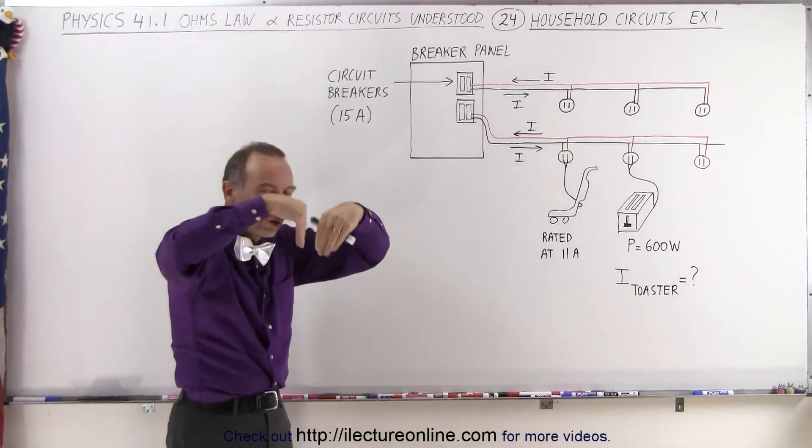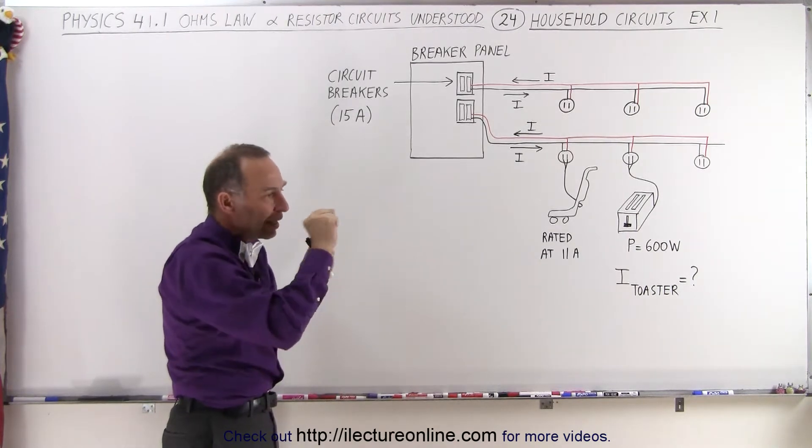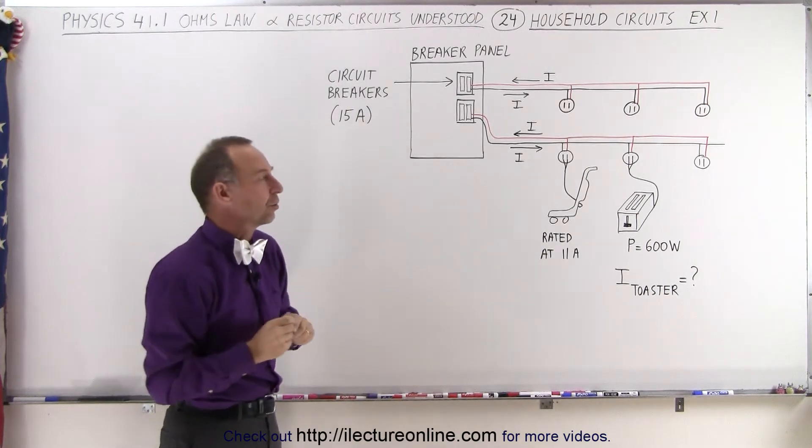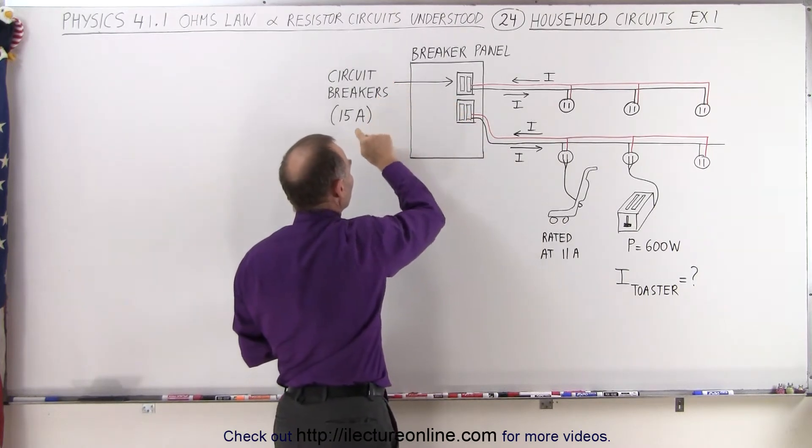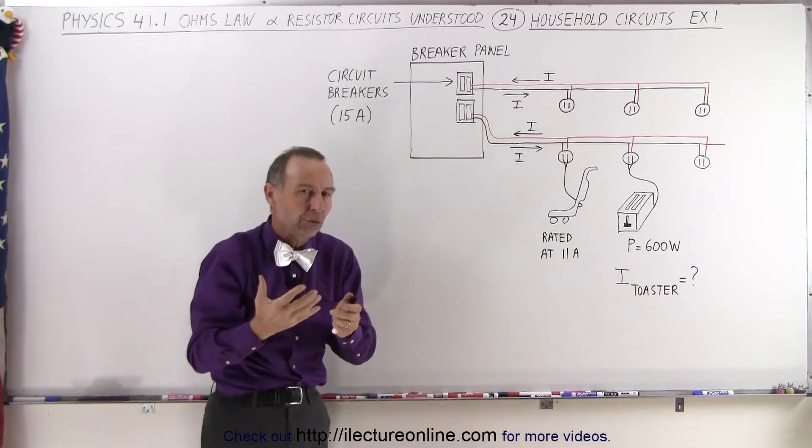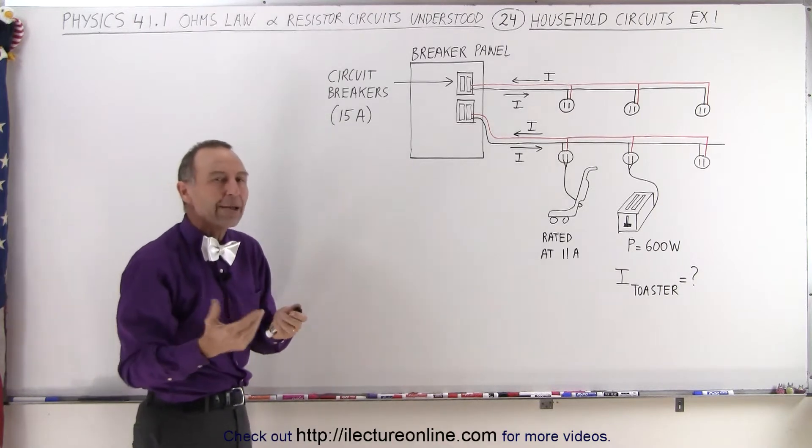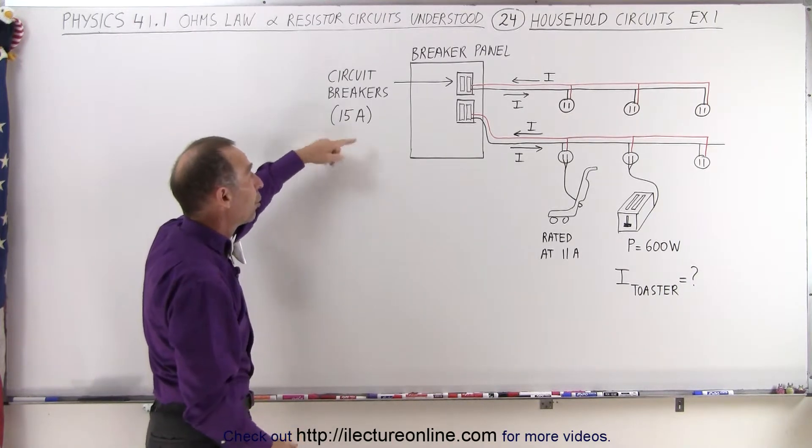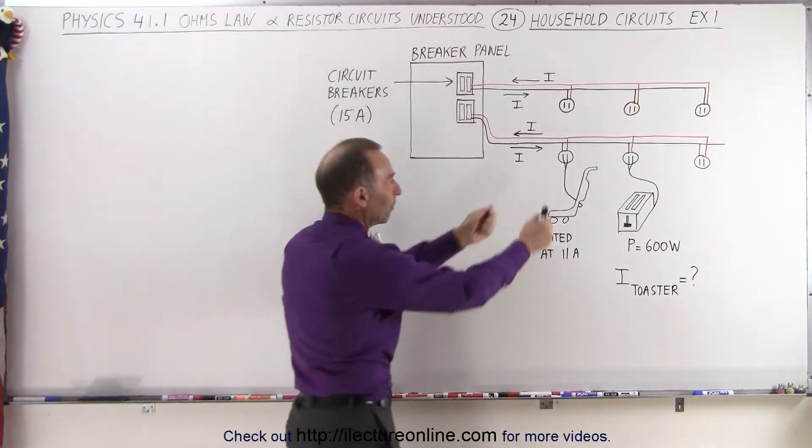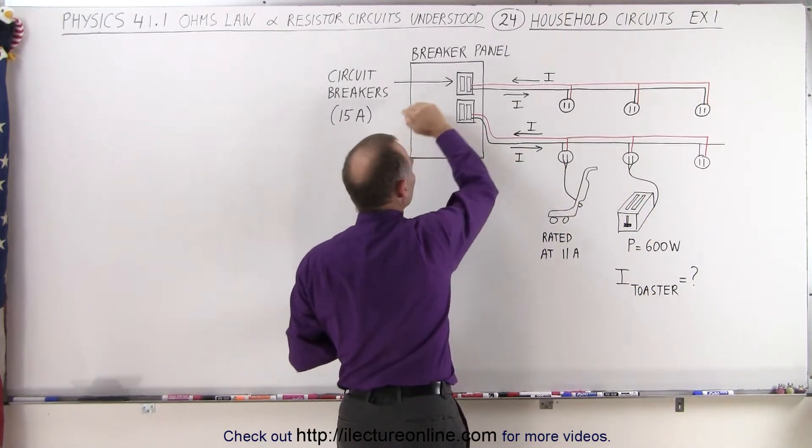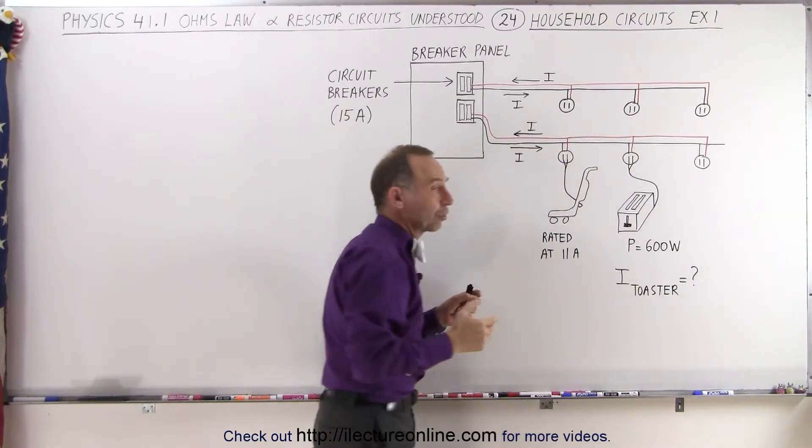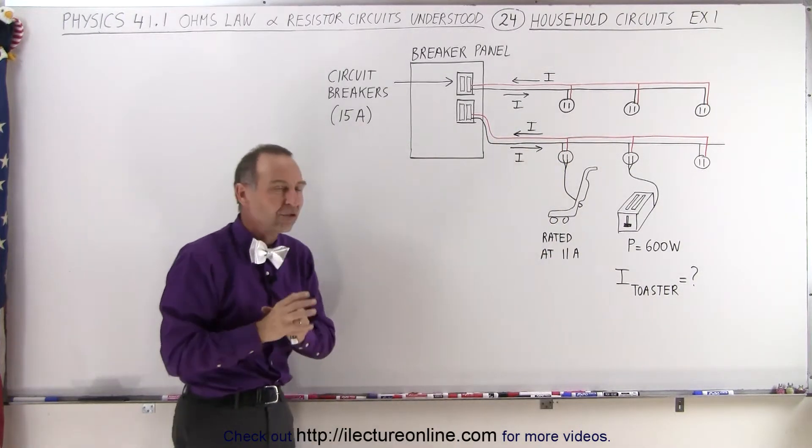The current that runs into your breaker panel gets subdivided into a number of smaller circuits. Each circuit is protected by a circuit breaker which is rated at a particular current. 15 amps or 20 amps are very typical circuit breakers. When you start plugging appliances into your circuit, you will limit how much current is allowed to come to the circuit to keep the circuit safe.